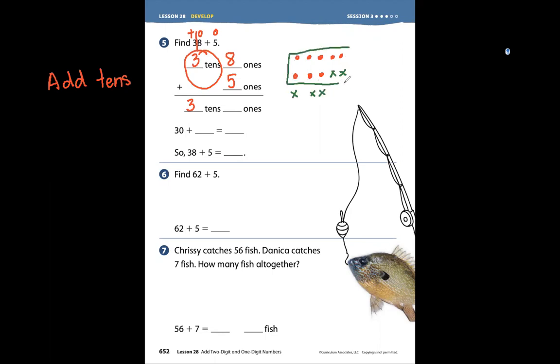You can see that we made a group of 10 here. 11, 12, 13. So we have 3 tens and 13 ones. So 3 tens is 1, 2, 3. It looks like this.